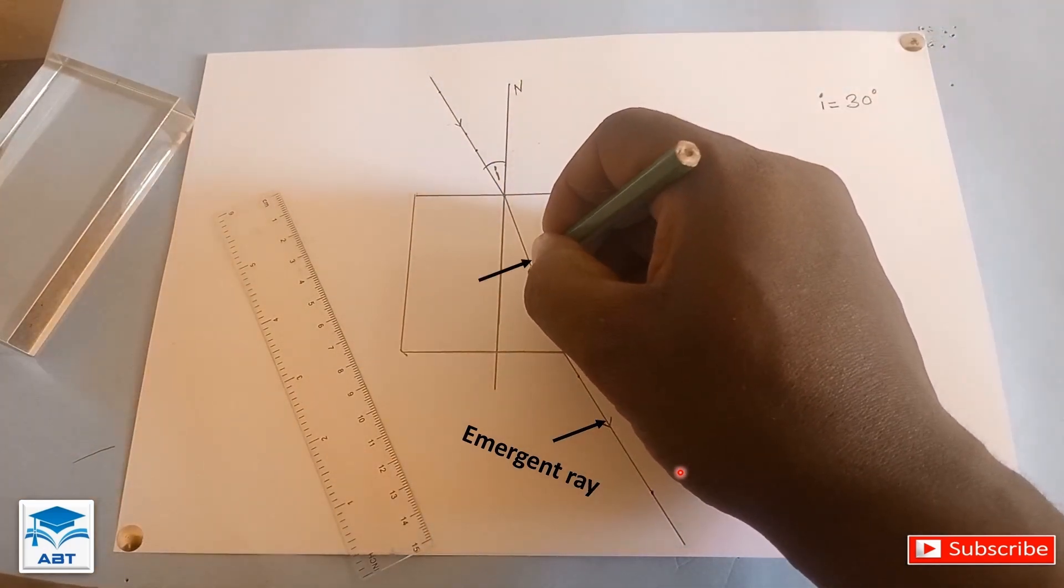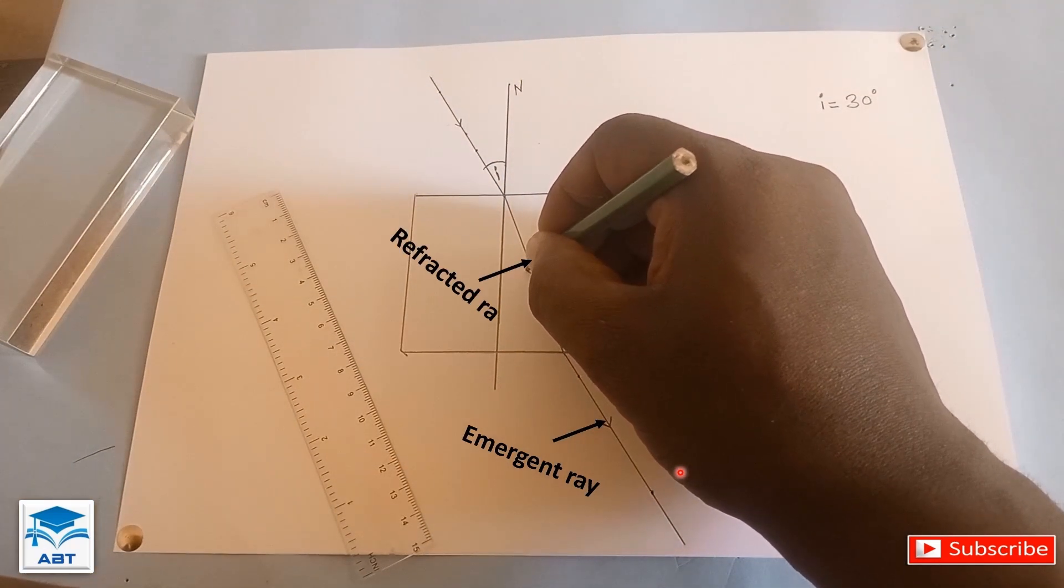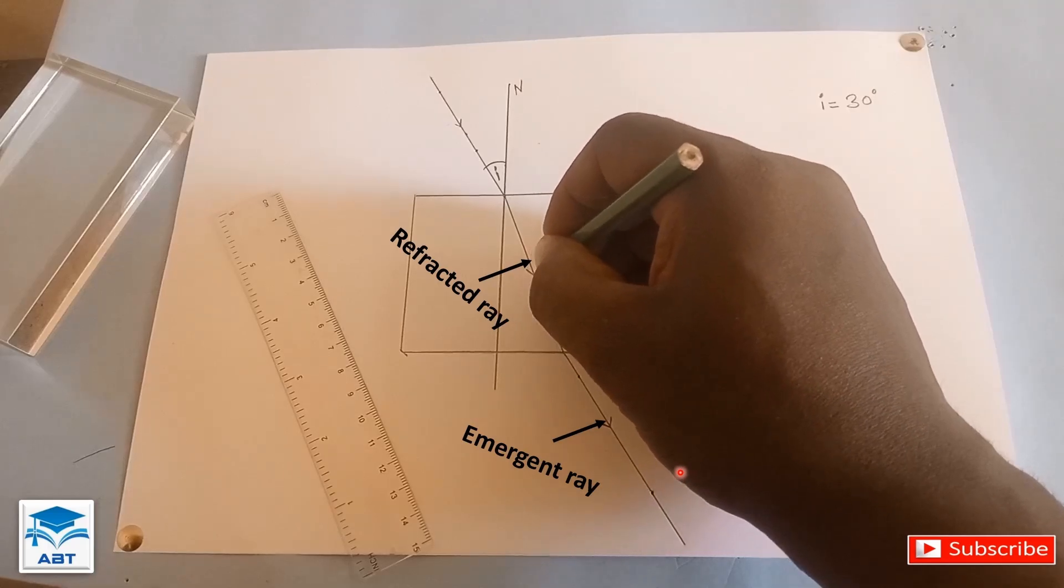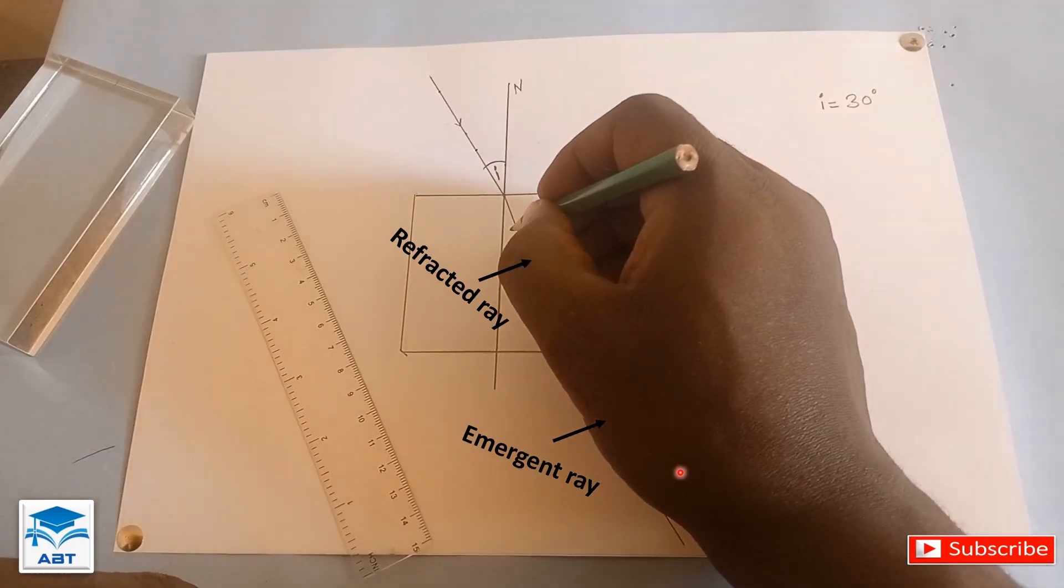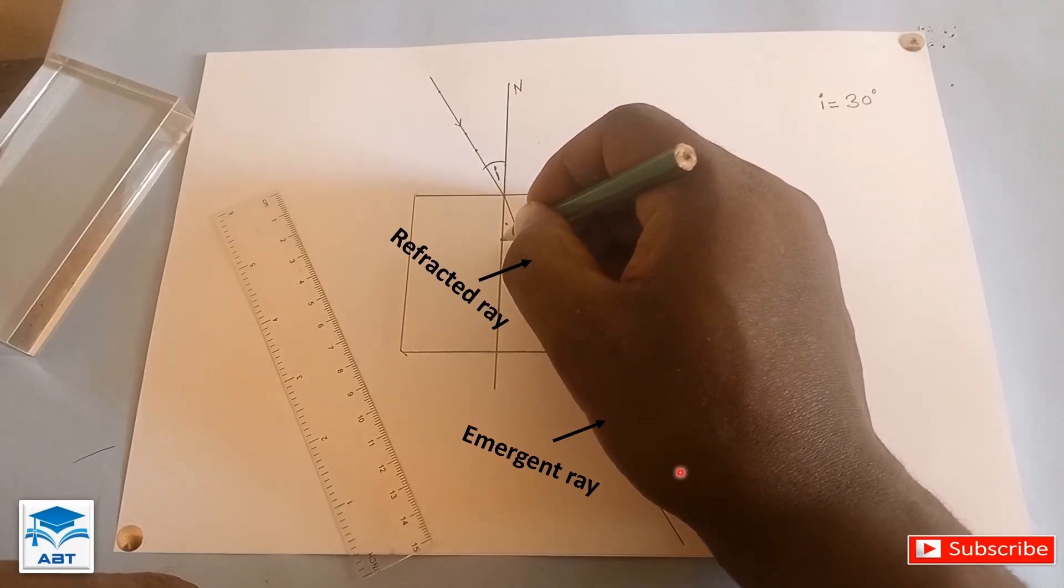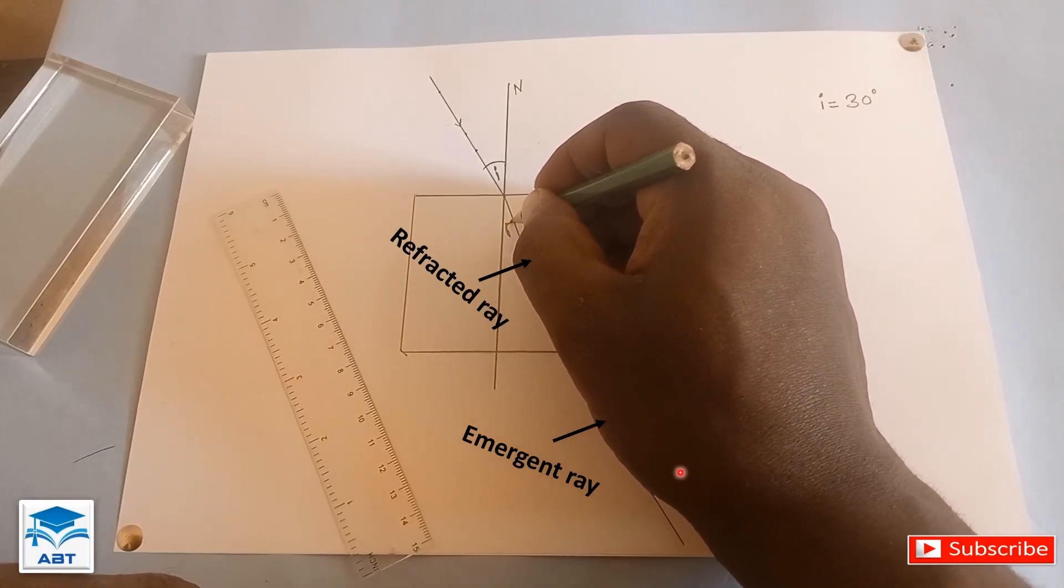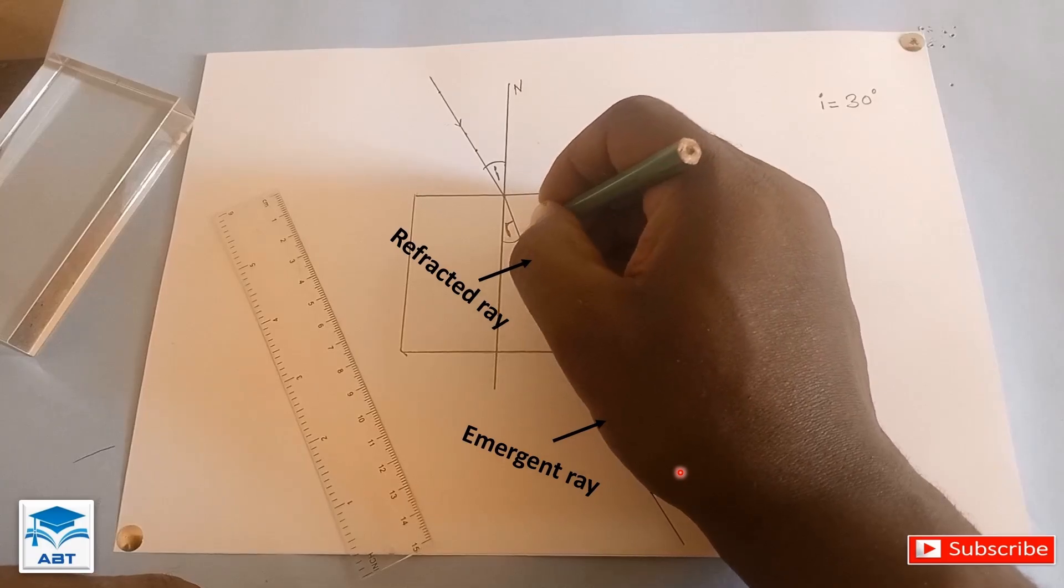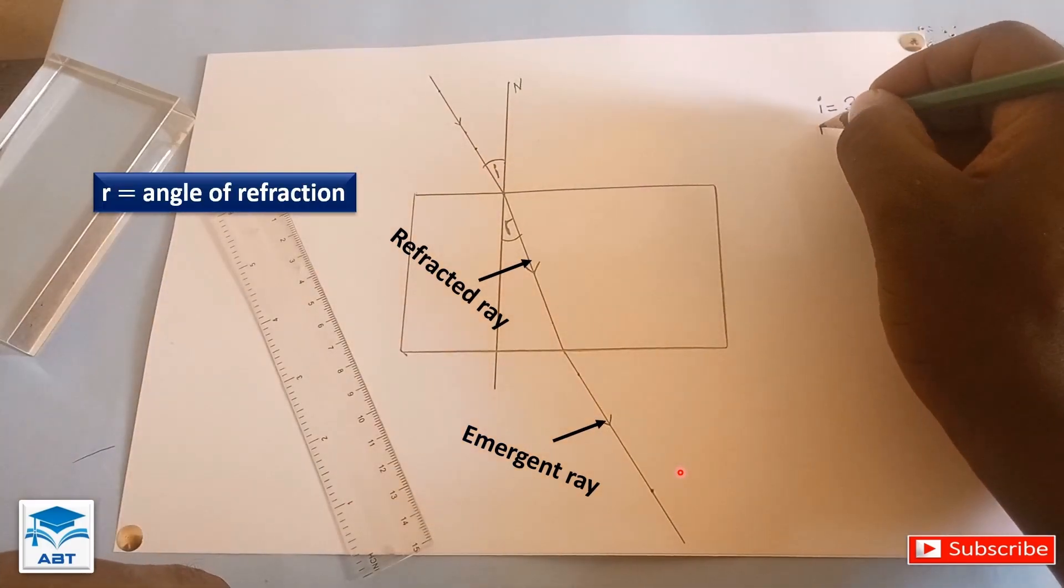This line is the refracted ray and the angle between the refracted ray and the normal is known as the angle of refraction, R.